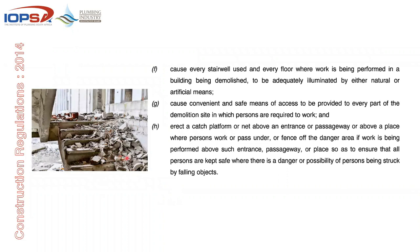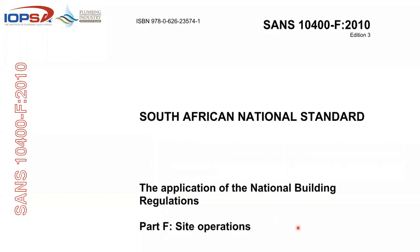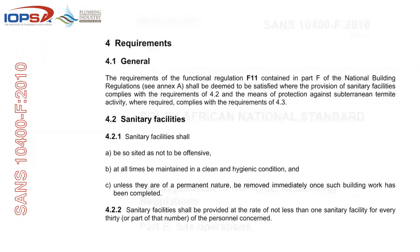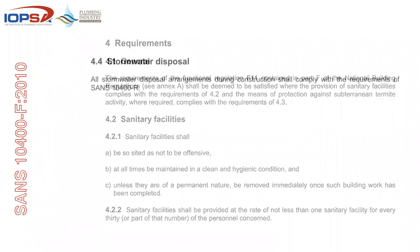Part F covers site operations. There are a number of requirements from site setup to site cleanup when the guys leave. Sanitary facilities are normally the first thing the plumber gets called for on a construction site — they'll be sited so they're not offensive, maintained and cleaned, and unless of a permanent nature, be removed once the building is completed. There's often an argument at the end of the project about who cleans what, and normally these things are resolved by no one getting paid until the site is cleaned.